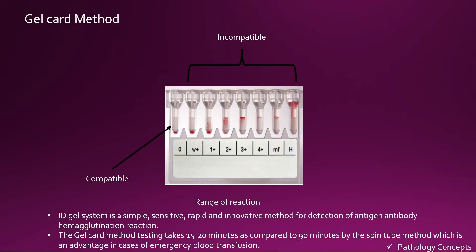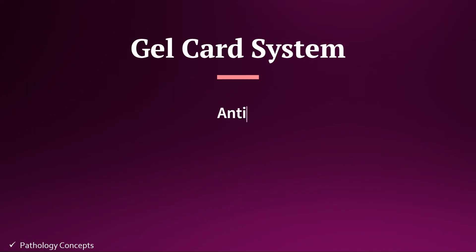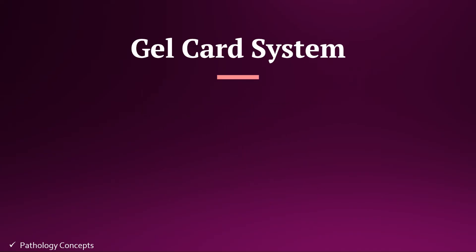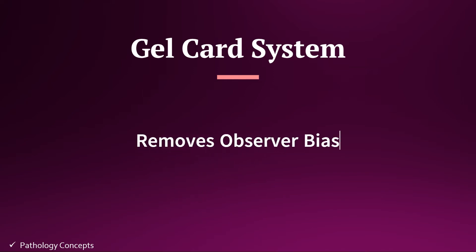If a negative reaction appears — when the gel card column is clear and RBCs are settled at the bottom — then the cross match is compatible and we can transfuse the blood product to the recipient. But if you see any reaction from weak plus to hemolysis, the cross match is incompatible and transfusion is not possible. The gel card system is a simple, sensitive, rapid, and innovative method for detection of antigen-antibody hemagglutination reactions. The gel card method takes 15 to 20 minutes compared to 90 minutes by the spin tube method, which is an advantage in emergency blood transfusion. Another advantage is that it removes observer bias.